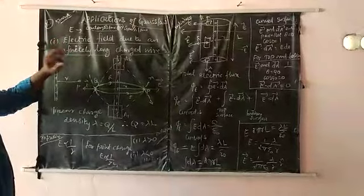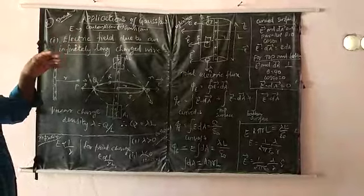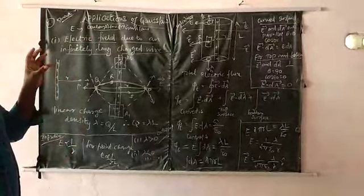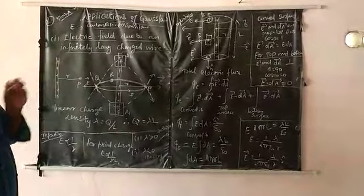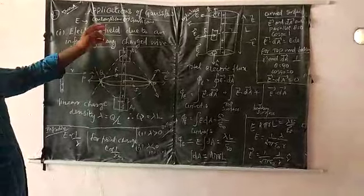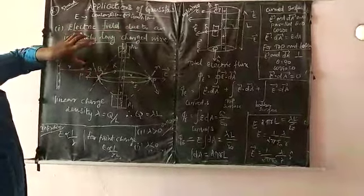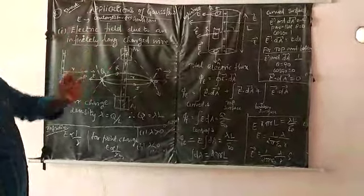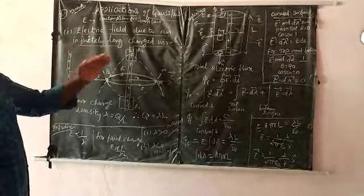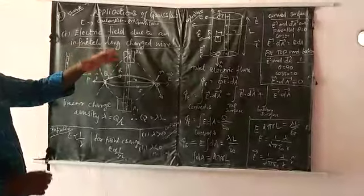You can find the electric field by using Coulomb's law or Gauss law for any arbitrary charge configuration. If the charge configuration has some symmetry in nature, then Gauss law can be applied. Symmetry property means the electric field is constant on the Gaussian surface — in a particular Gaussian surface, the electric field is constant due to the symmetric nature.